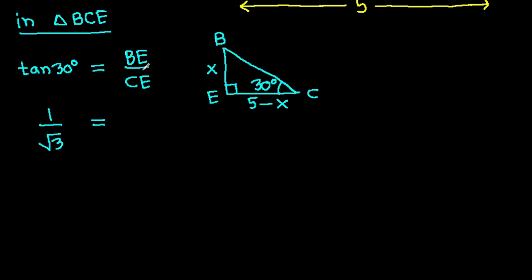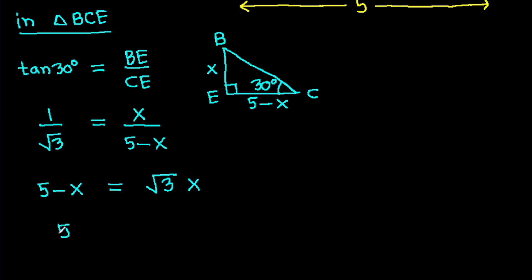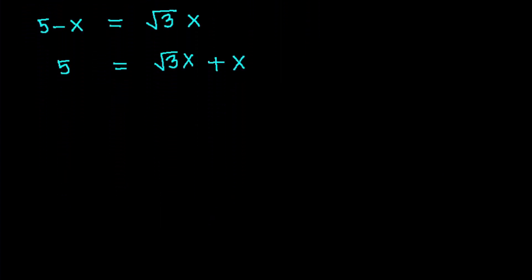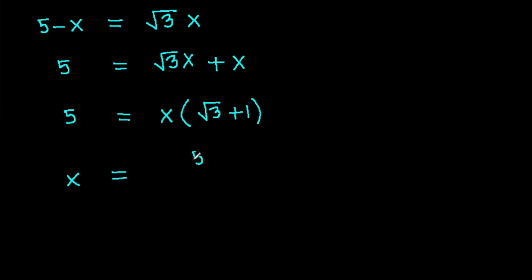So 1 over root 3 equals X over (5 minus X). If we cross multiply, then 5 minus X will be root 3 times X. So X will be 5 over (root 3 minus 1).